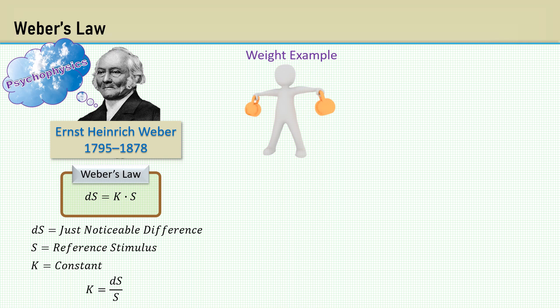Here's an example for sensing weight. Let's say we are holding a 10 kilogram weight. We can perceive an increase of 0.2 kilograms, so K is 0.02. This is the just noticeable difference. We can use this factor in Weber's law to predict the just noticeable difference when holding a 50 kilogram weight, which would be around 1 kilogram.